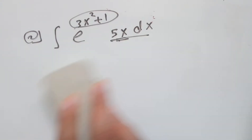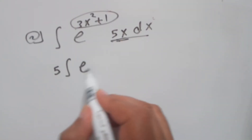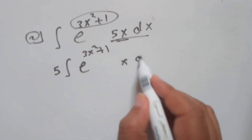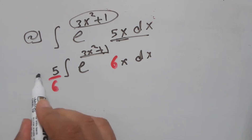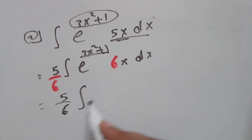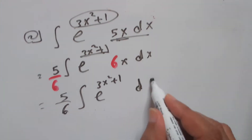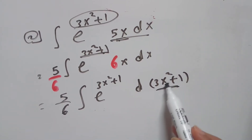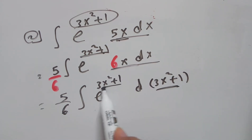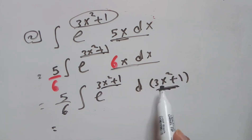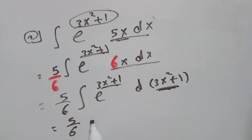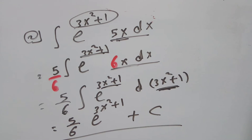Alternatively, you can write the question with 5 outside, and the integral of e to the power u. The derivative of 3x squared is 6x dx. Multiply by 6 inside and divide by 6 outside, giving 5 over 6 times the integral of e to the power 3x squared plus 1 times d(3x squared plus 1). Since the exponent matches this value, applying the rule gives 5 over 6 times e to the power 3x squared plus 1 plus c — the same answer, applying the rule directly without substituting.